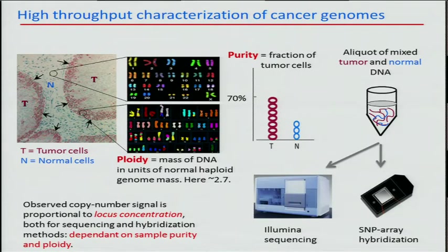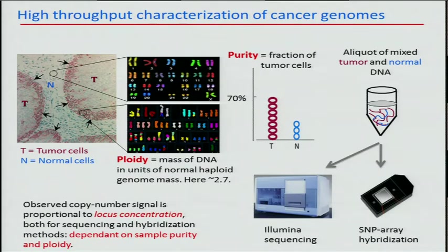We were motivated to develop a method that could deconvolve at least these two populations and give you integer estimates of allelic copy numbers fixed in the cancer clone, as well as to understand the tumor ploidy and the purity of the tumor itself.